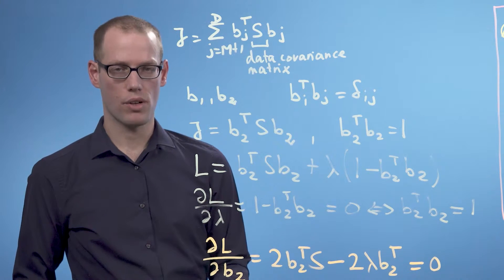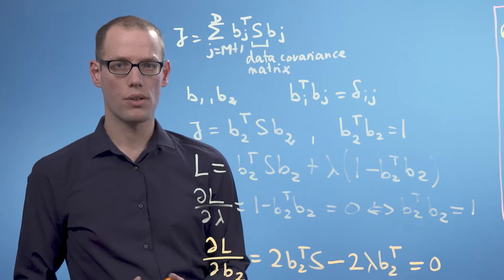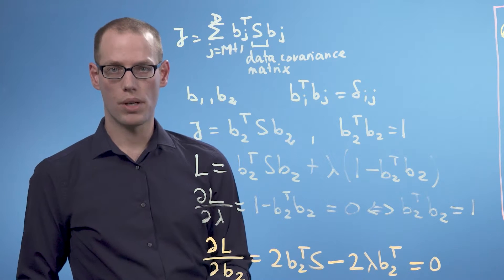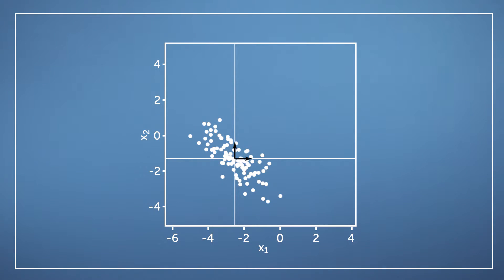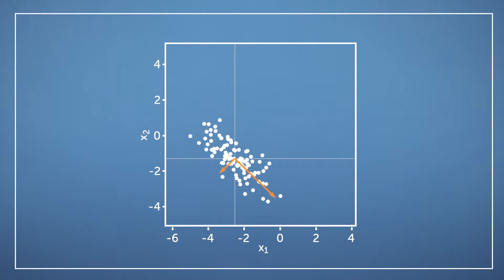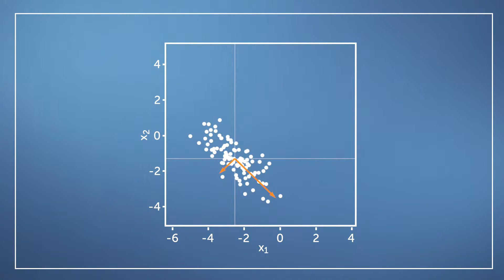Keep in mind that the eigenvectors of the covariance matrix are already orthogonal to each other because of the symmetry of the covariance matrix. So in a two-dimensional example, if this is our data, the best projection that retains the most information is the one that projects onto the subspace spanned by the eigenvector of the data covariance matrix belonging to the largest eigenvalue, indicated by the long arrow shown here.